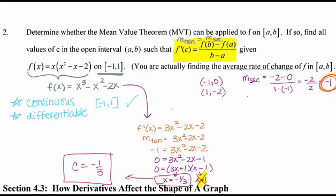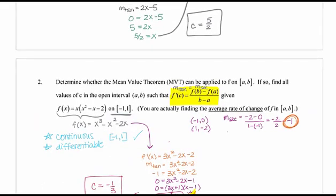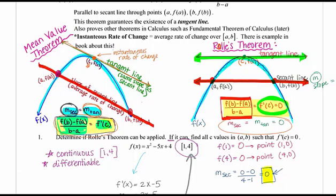I hope you found this video helpful. To recap: both theorems guarantee the existence of a tangent line parallel to a given secant line at some point c in the interval — where the instantaneous rate of change equals the average rate of change. Given two points, find the slope of the secant line, set it equal to the first derivative, and solve for where those slopes are equal.